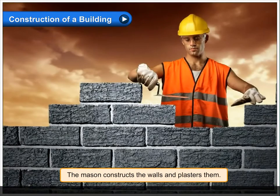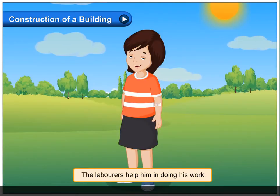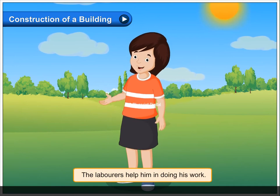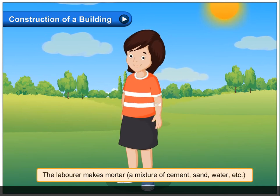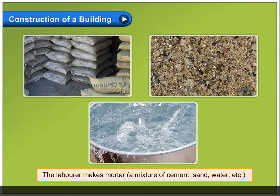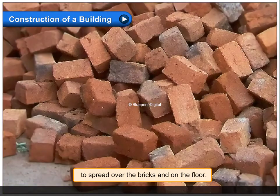The mason constructs the walls and plasters them. He lays the floors using a trowel. The laborers help him in doing his work. The laborer makes mortar, a mixture of cement, sand, water, etc., to spread over the bricks and on the floor.